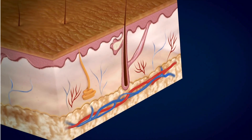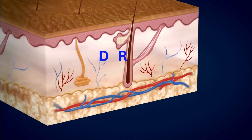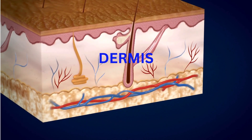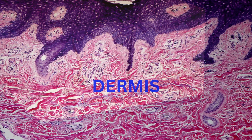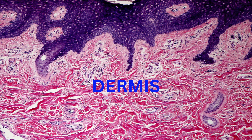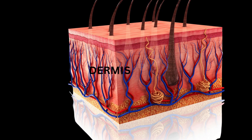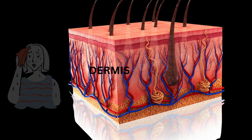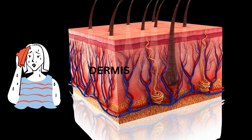The dermis, which is the middle layer of the skin, contains various structures, including glands that play important roles in maintaining skin health. The two main types of glands found in the dermis are sweat glands and sebaceous glands.